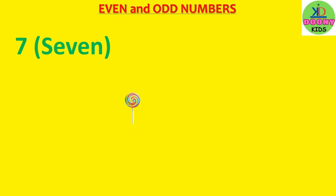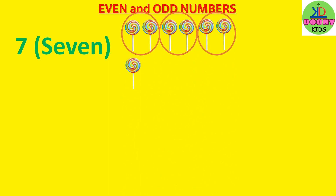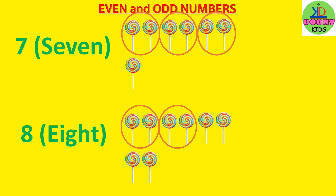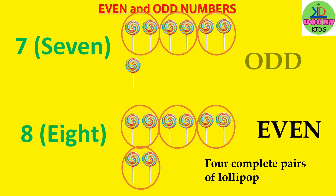7 — 1, 2, 3, 4, 5, 6, 7. Now count the pairs — there are incomplete pairs. 8 — 1, 2, 3, 4, 5, 6, 7, 8. Now count the number of pairs: 1, 2, 3, 4 — there are 4 complete pairs of lollipop. So number 8 is an even number, and number 7 is an odd number.